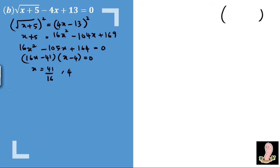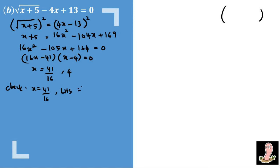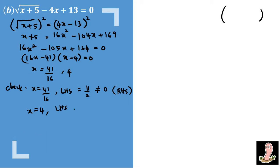Always check your answers — accept or reject them. When x = 41/16, the left-hand side equals 11/2, which is not equal to 0 (our right-hand side), so we reject x = 41/16. When x = 4, the left-hand side equals 0, which matches the right-hand side. Therefore, our answer is x = 4 only.